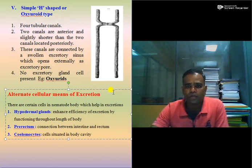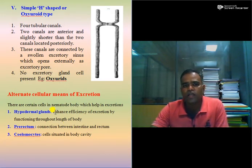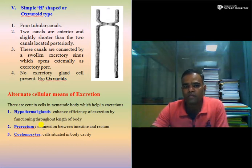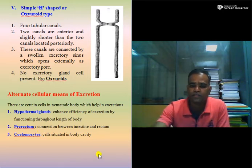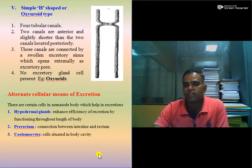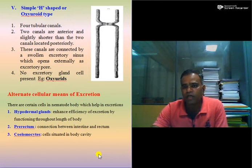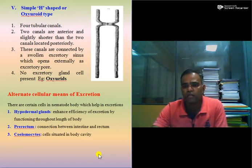There are also alternate cellular means of excretion present in nematodes. These are: hypodermal glands, which enhance efficiency of excretion by functioning throughout the length of the body; pre-rectum, which is the connection between the intestine and rectum; and coelomocytes, which are cells situated in the body cavity or coelom, also acting as alternate means of excretion. If anyone asks to describe the excretory system, you must describe both the glandular and tubular systems with their types, as well as the alternate cellular means of excretion.